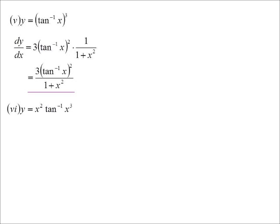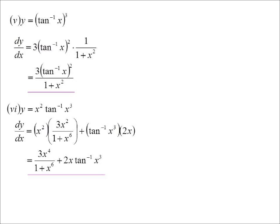Product rule. Write down the first x squared, differentiate the second. Okay, it's not a linear function, so I'm going to say derivative over 1 plus the function squared. Derivative of x cubed, 3x squared. 1 plus the function squared, x cubed squared, x to the power of 6. Plus, write down the second, differentiate the first. Differentiate x squared, I get 2x. Now, all we've got to do is tidy all that up. So, we get 3x to the fourth, nothing more that can happen there because there's no cancelling, plus 2x inverse tan x cubed.